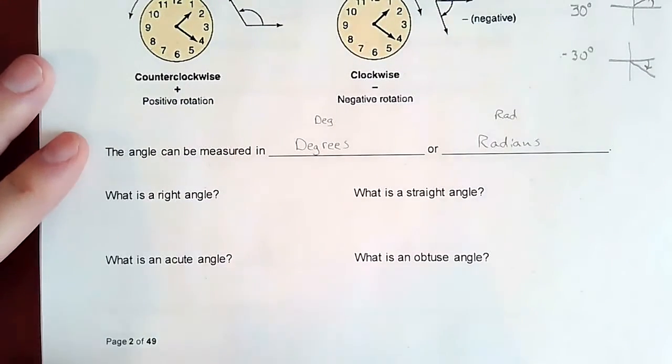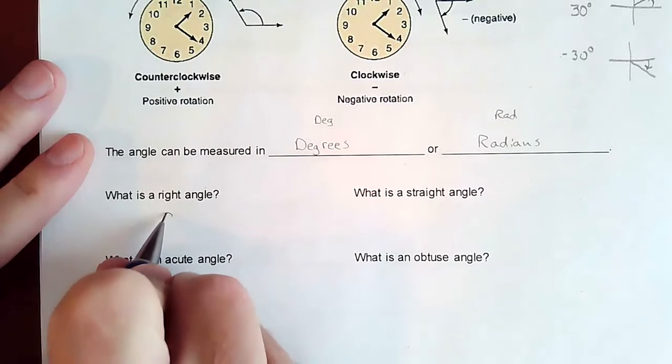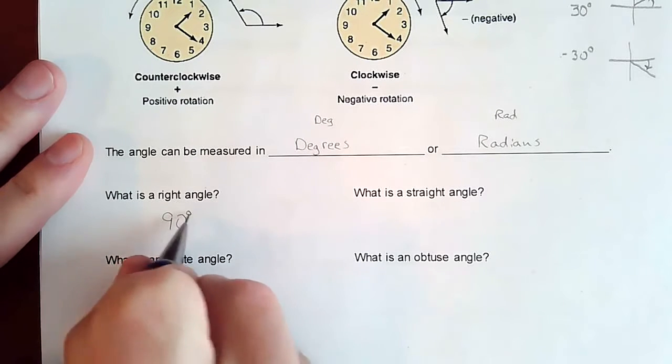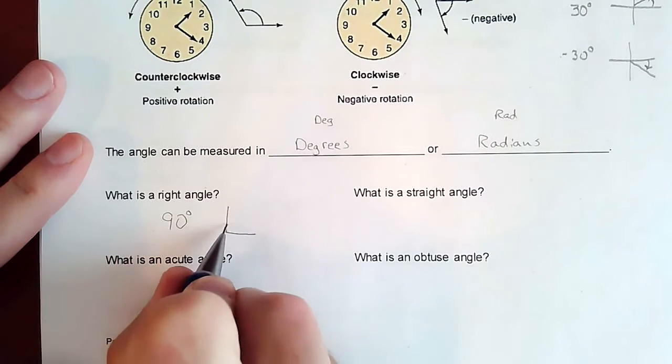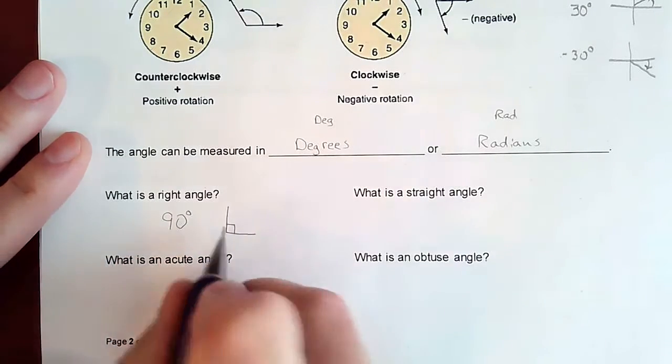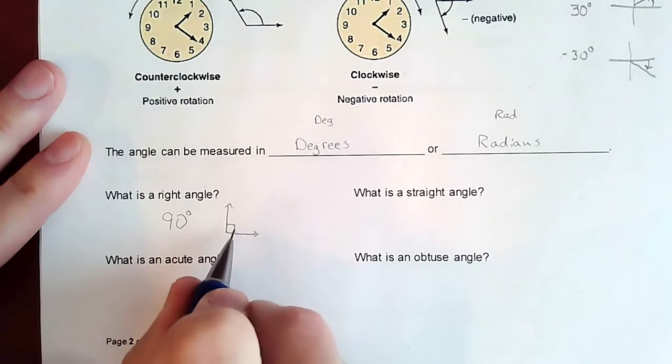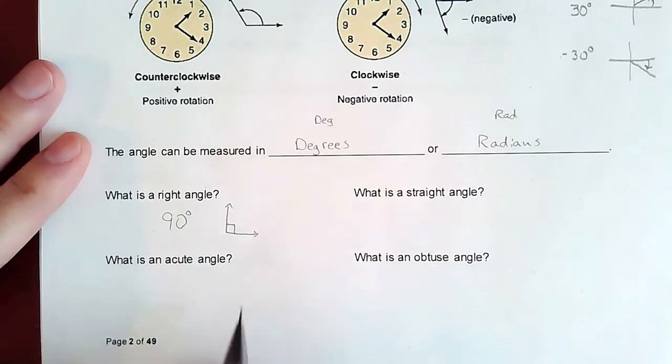Alright, so we have a couple classifications for some angles. We have a right angle is going to represent a 90 degree angle. And just make sure you put a little box on there to represent that it's 90, no matter how not 90 it looks, you put a box on it, that meant that it was supposed to be 90.